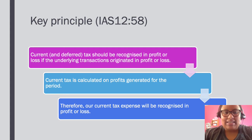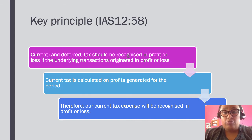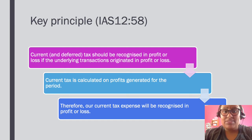Current tax is calculated on profits that are generated for the period. We normally start with our accounting profit before tax, then adjust it for differences between accounting and tax, and then calculate our current tax from that. In that case, the current tax that we calculate would all be recognized in profit or loss because it relates to items that originated in profit or loss.